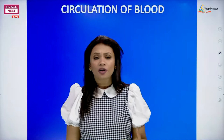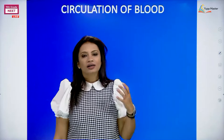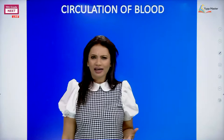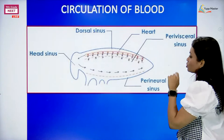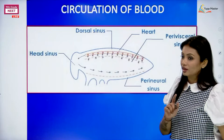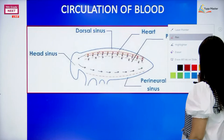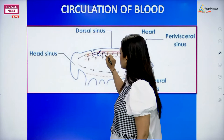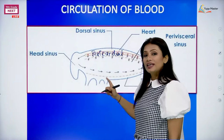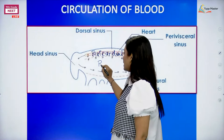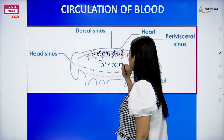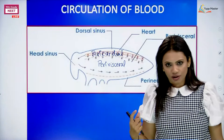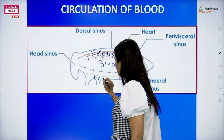Now let us cover how exactly the circulation mechanism takes place in the body of the cockroach. Let's revise the hemocoel structure. When we talk about the hemocoel, remember there were three sinuses. First: the pericardial sinus - the uppermost one which encloses the heart. Second: the perivisceral sinus - the middle one with all the visceral organs. Third: the perineural sinus - the lowermost one which is having the ventral nerve cord.